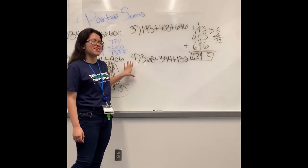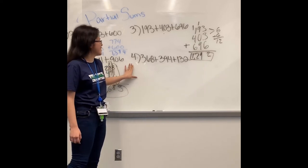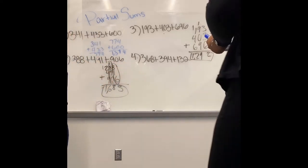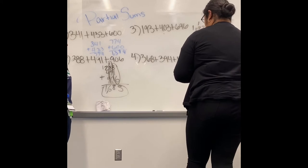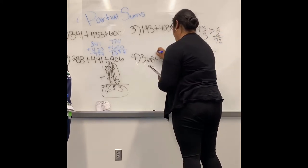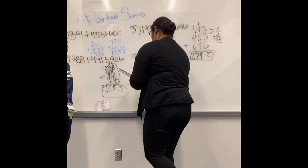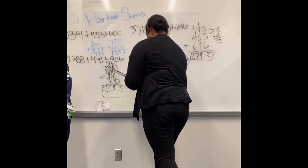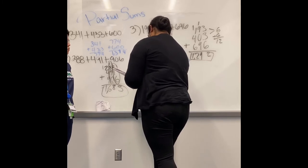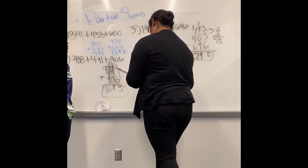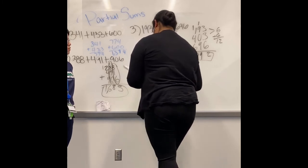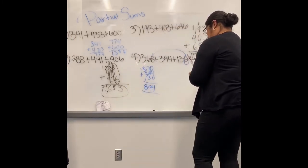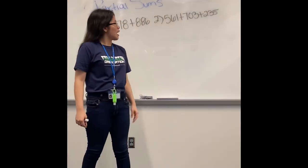Now for problem four, will somebody like to come to the board? The answer I got is eight hundred ninety-four. What I did is I combined 2 and 8 which equals 370, and then I just added 394 and 130 — that's 4, then 9, carry the one — and eight: 394. Thank you.